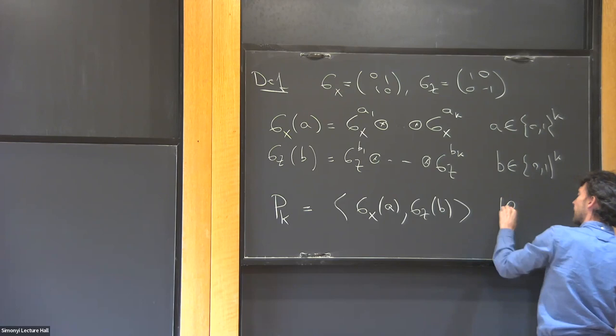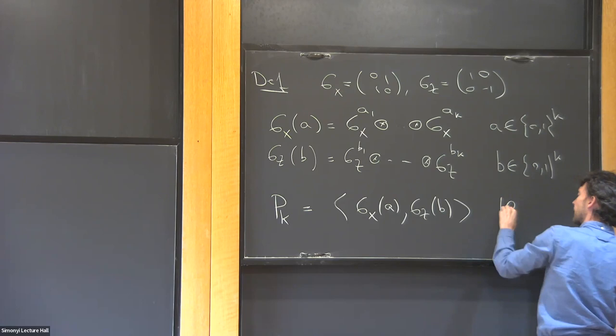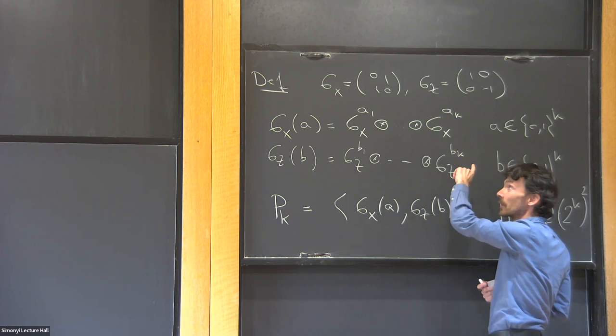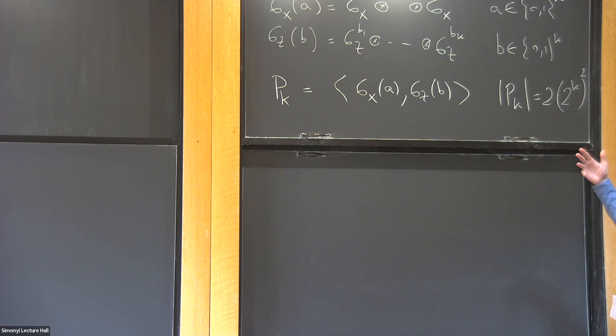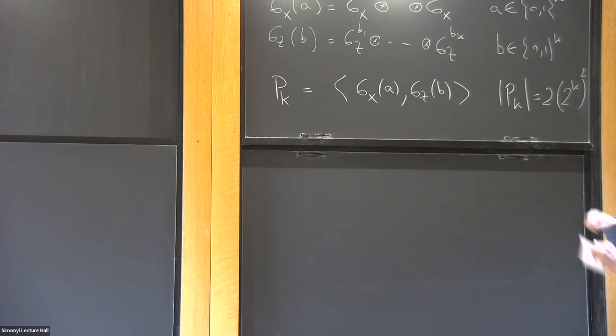The Pauli group has size 2 times 2^(2k) — the factor of 2 is for a sign. When k equals one it has size eight: the identity, sigma-x, sigma-z, the product sigma-x sigma-z, and the negatives of all of these. For people who know group theory, you can see this as a central extension of the product of two copies of Z_2^k — it's basically two copies of Z_2^k with a strange anti-commutation multiplication rule.